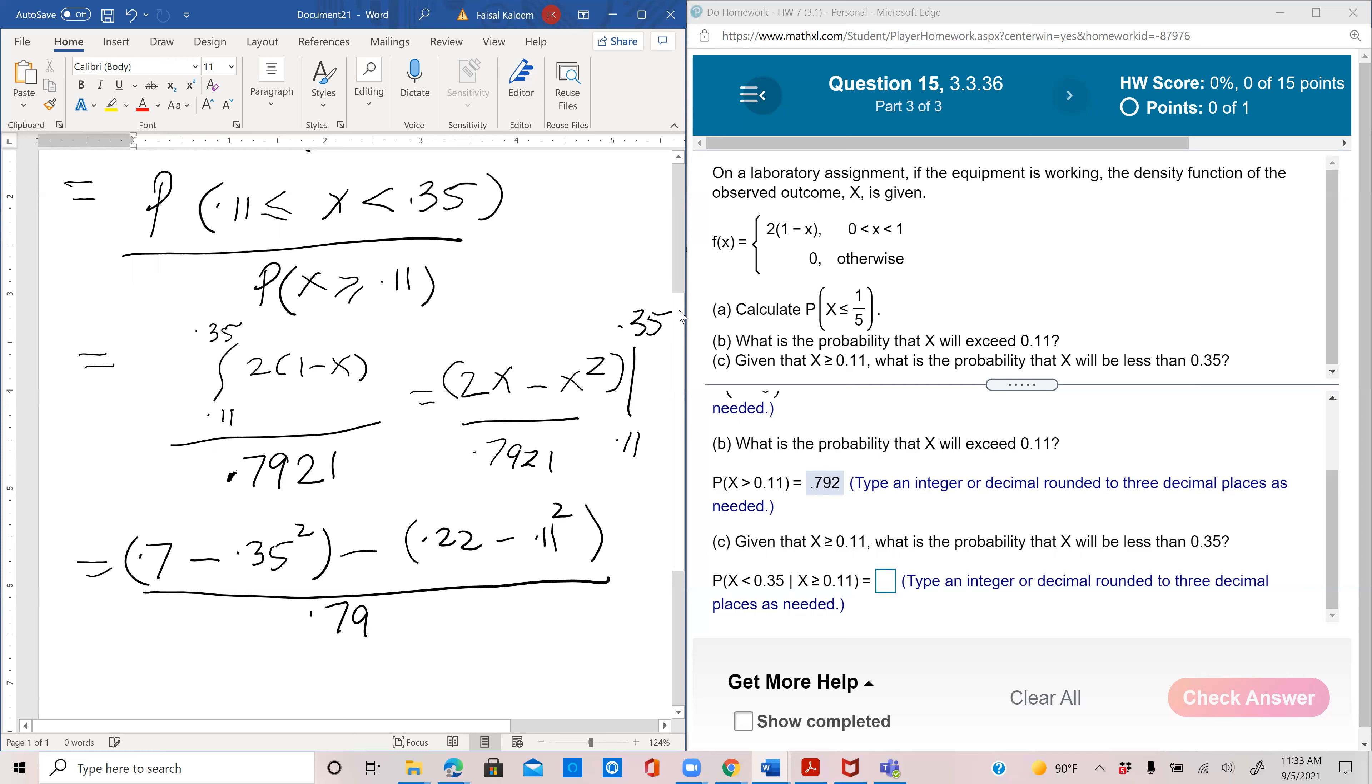over 0.7921. Let's see what that comes to: 0.7 minus 0.35 squared minus 0.22 plus 0.0121 divided by 0.7921, which gives 0.467.